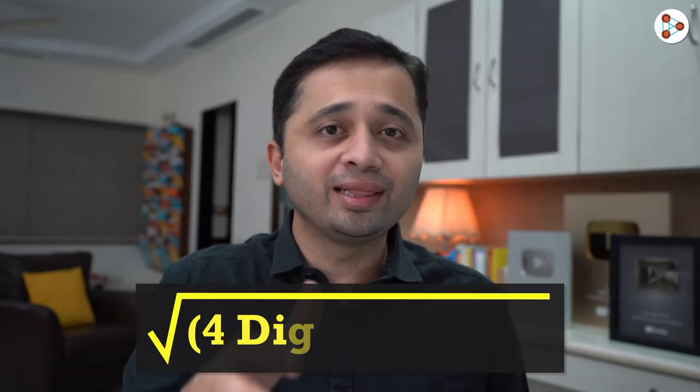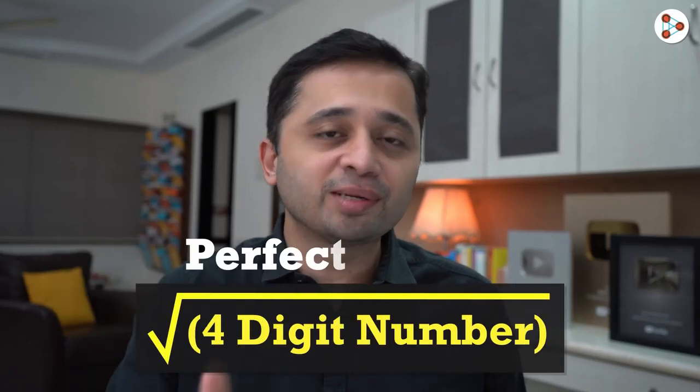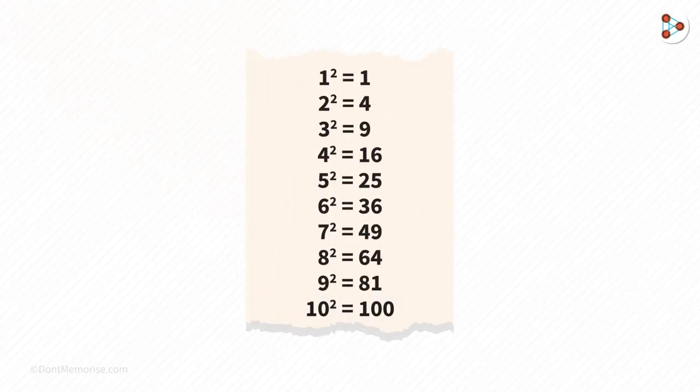Let's see another example of how we can calculate the square root of a 4-digit number which is a perfect square. Just like we've seen before, firstly we need to know the squares of numbers from 1 to 10.